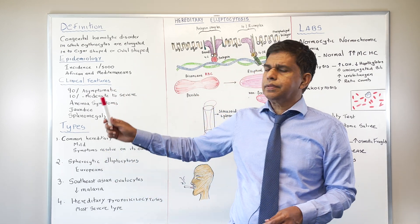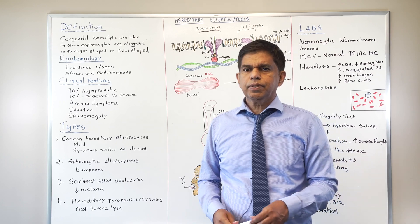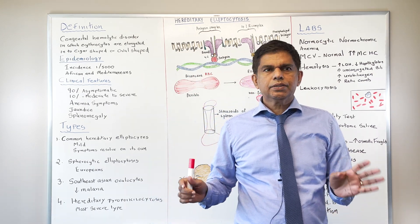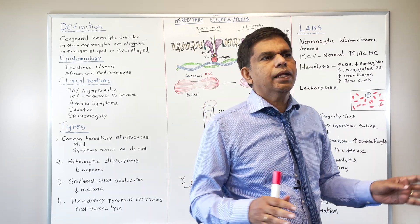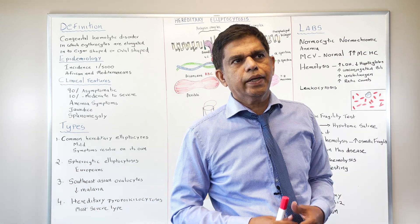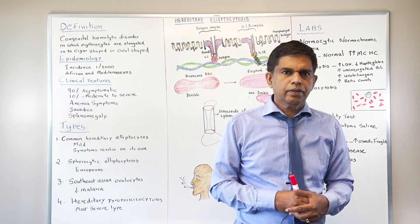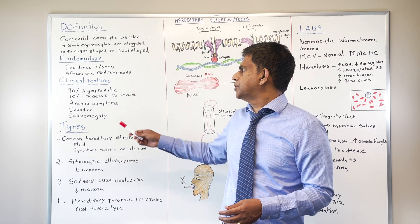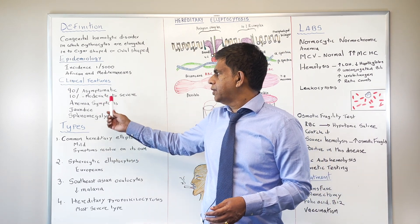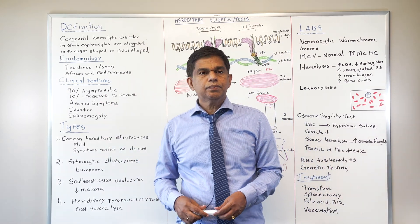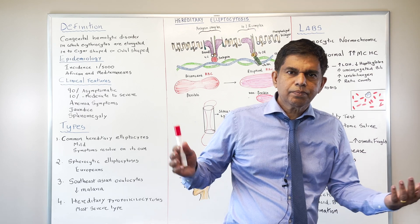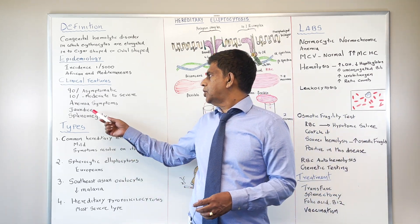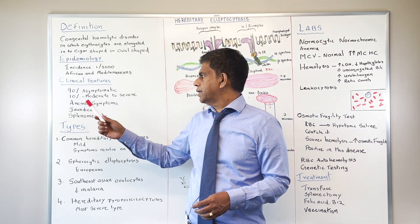Looking at the clinical features: 90% of patients are asymptomatic — it could be an incidental finding when you do blood work. 10% of people can have problems: anemia symptoms like fatigue, shortness of breath, and palpitations. They can also have jaundice and splenomegaly.